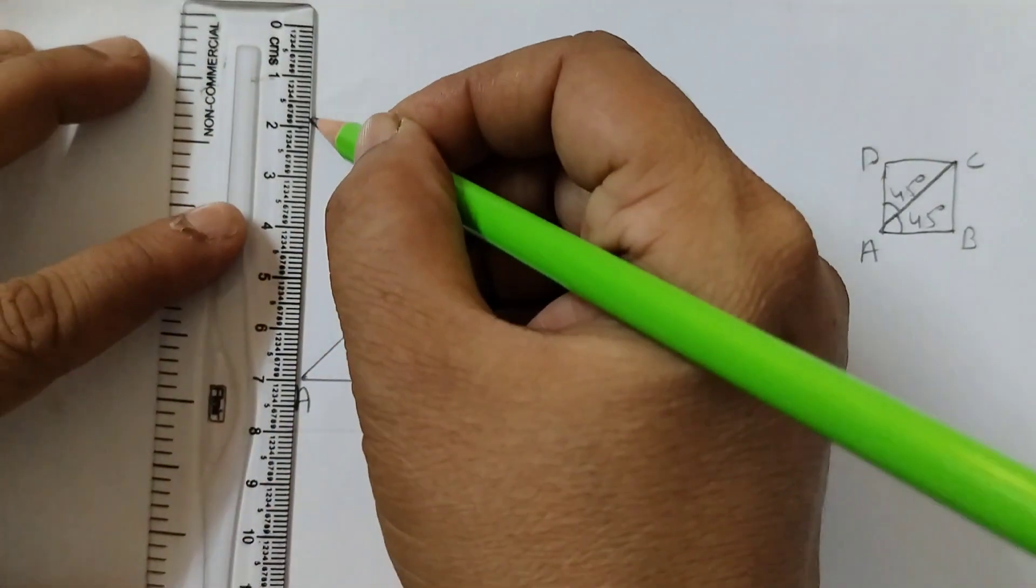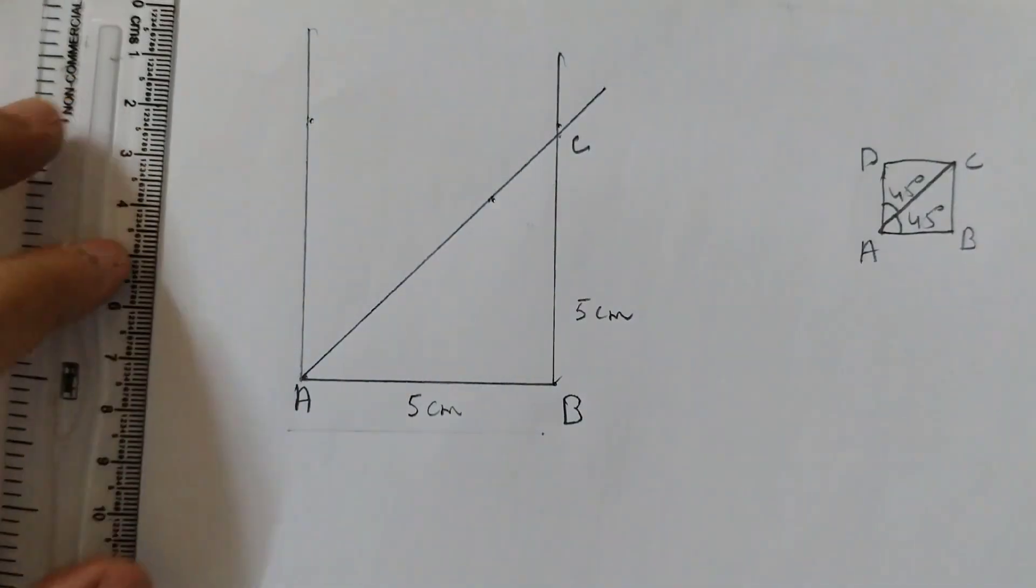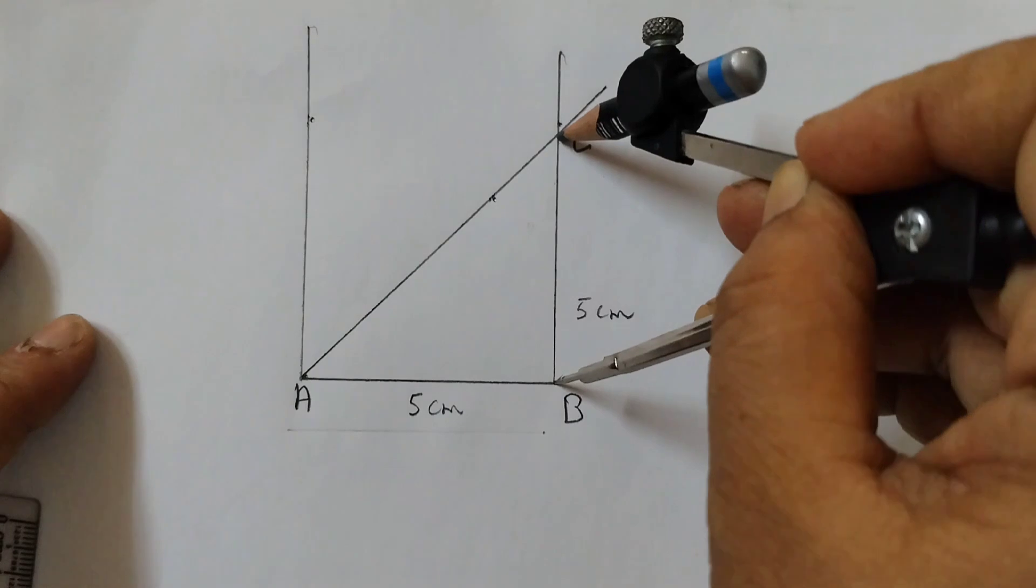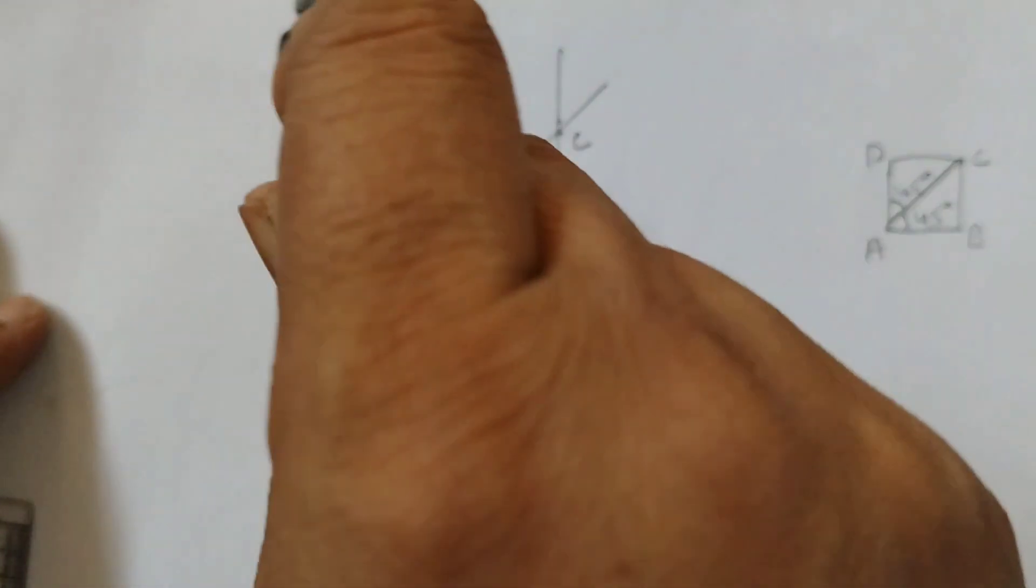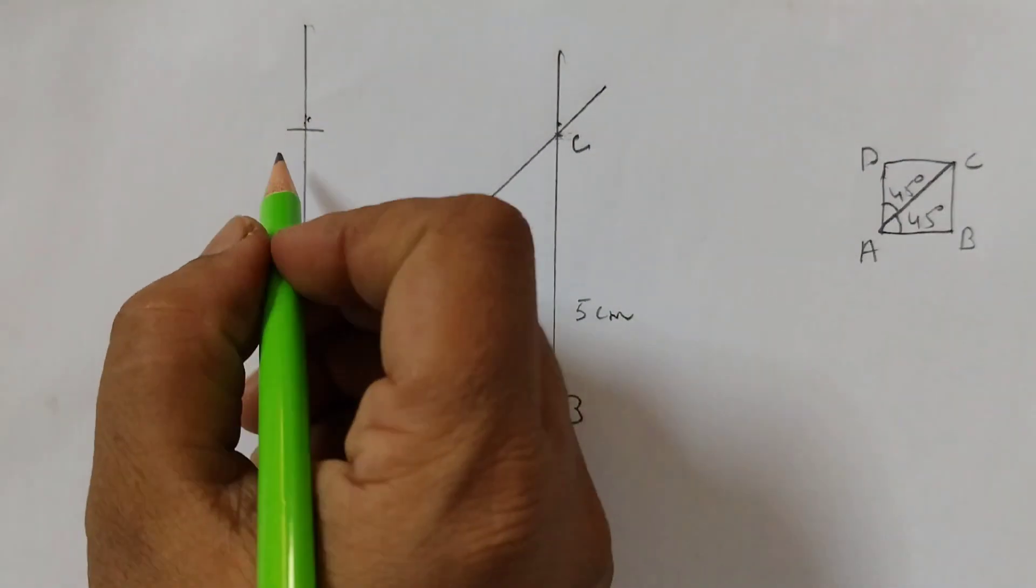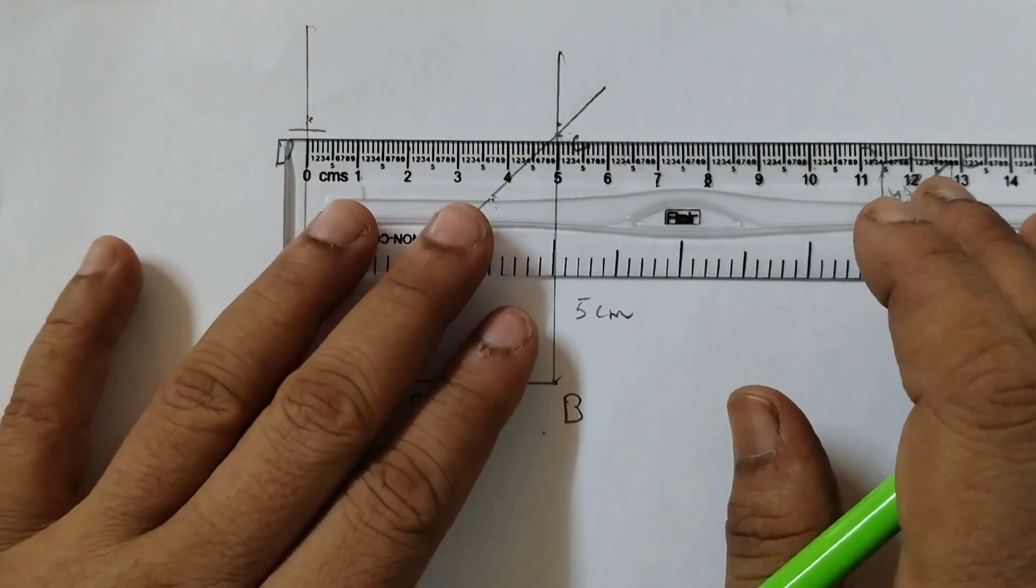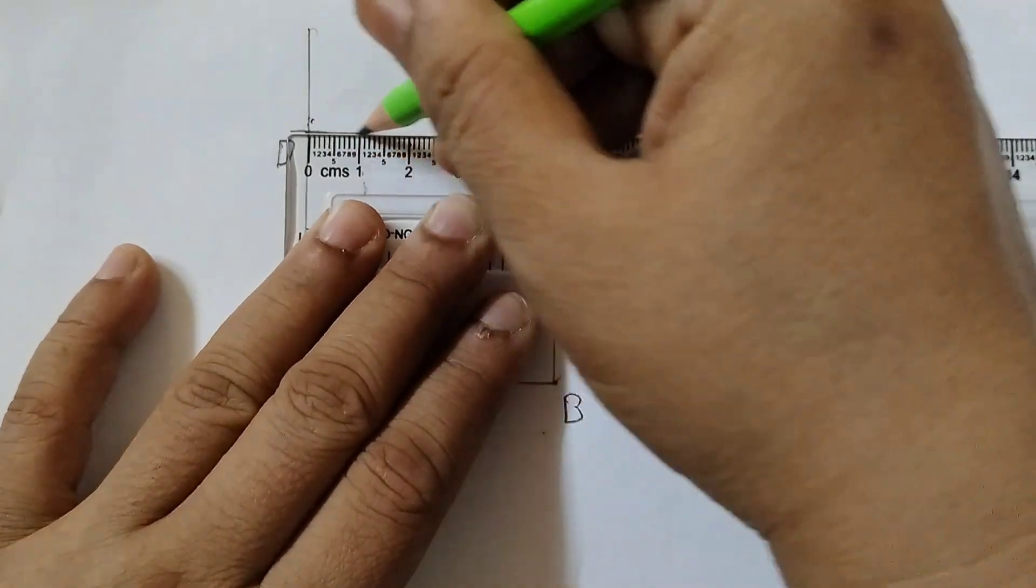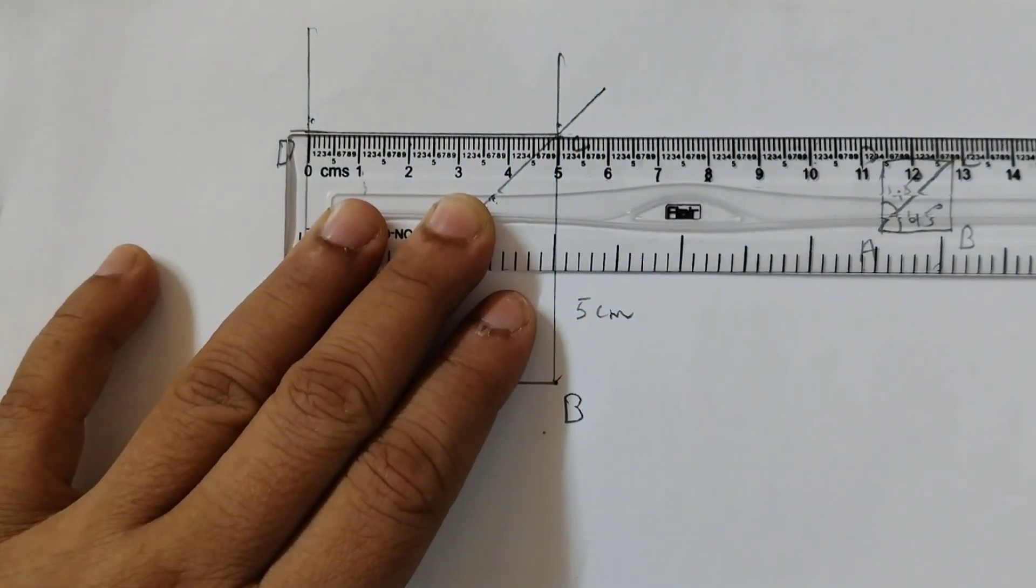Take a compass. Measure this length. Leave the metal point here and cut an arc like this. Now we will label this as D and join these two points.